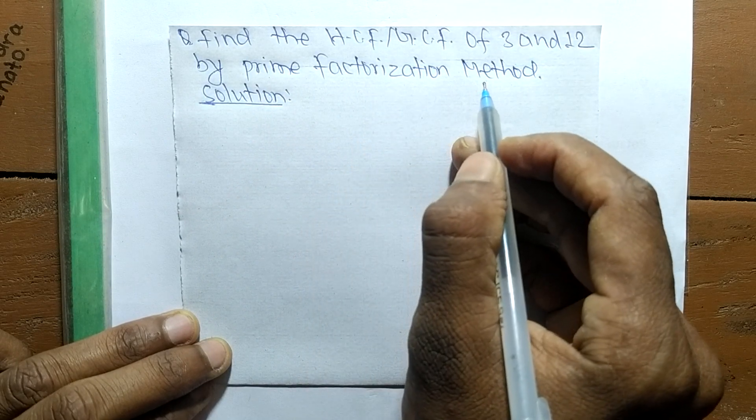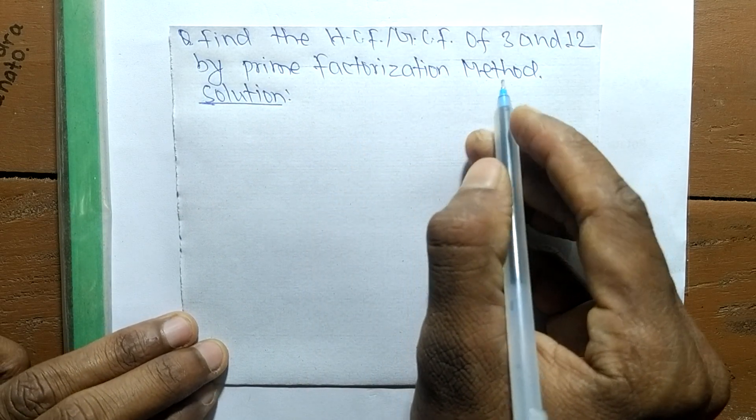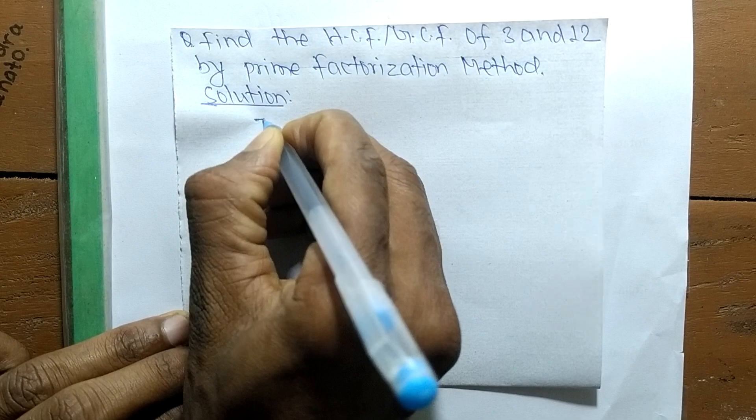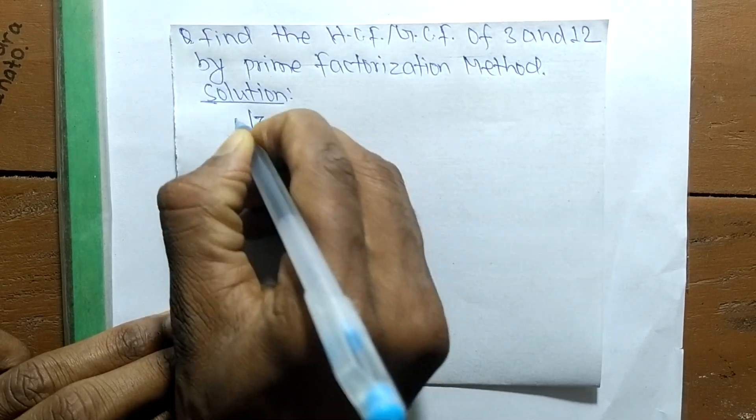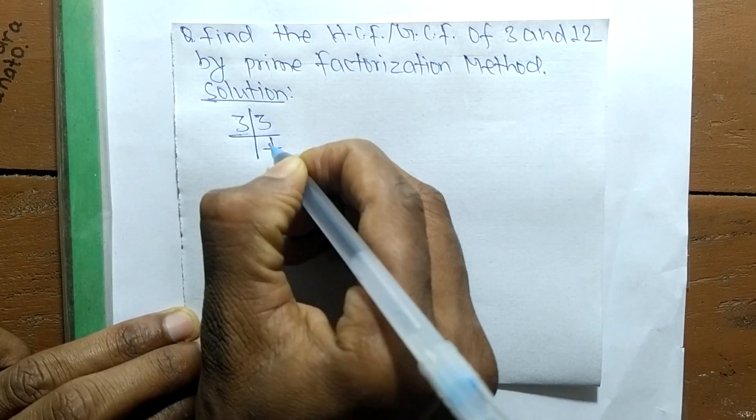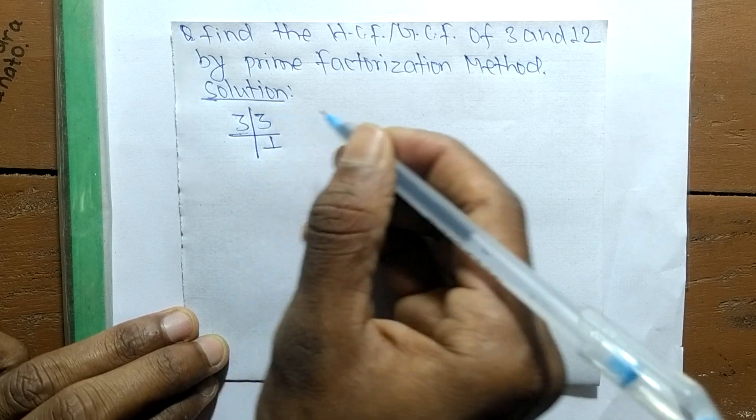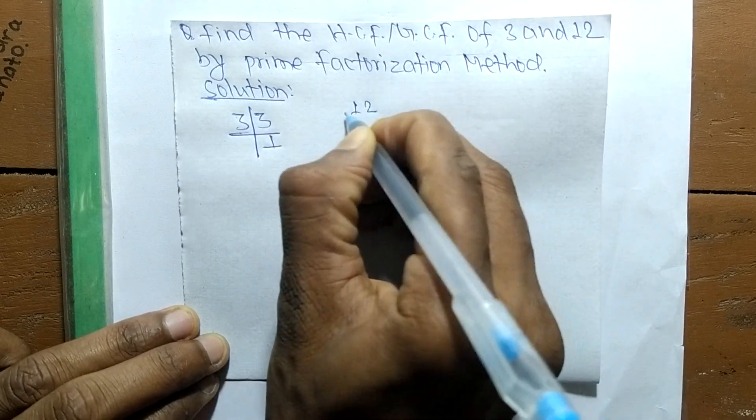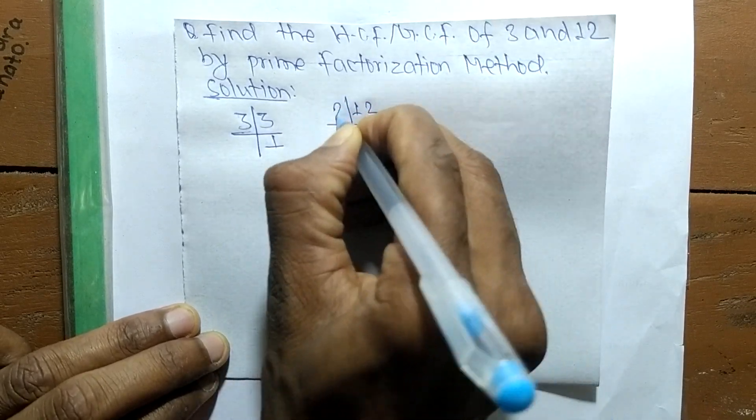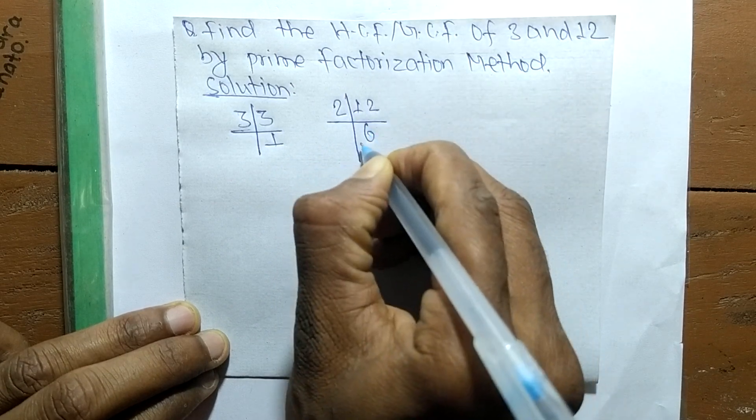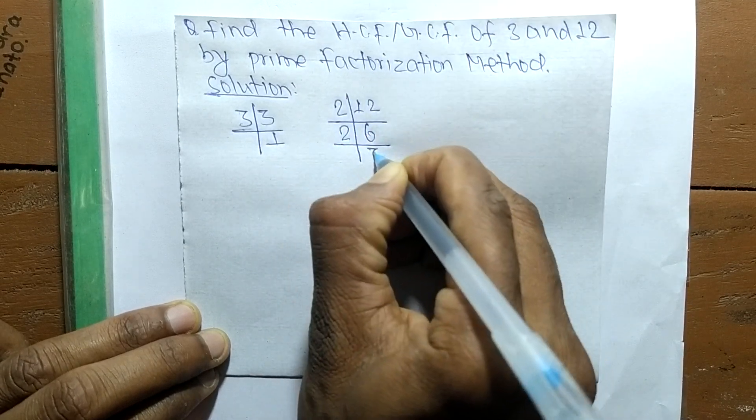So first, we find out the prime factors of 3, which is 3 times 1, meaning 3. Likewise, the prime factors of 12 are: it is 2 times 6, which equals 12. 2 times 3 equals 6, and 3 times 1 equals 3.